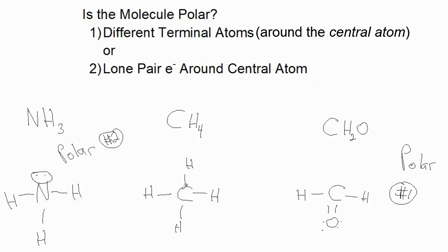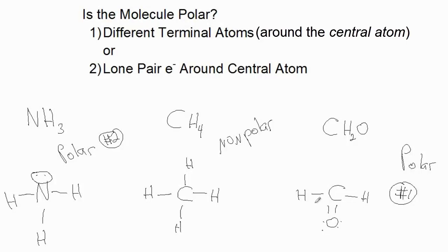CH4 has carbon in the center and four identical terminal atoms, so this is a nonpolar molecule. The last one, CH2O, has carbon double bonded to oxygen and two hydrogens singly bonded to the carbon. There are no lone pairs around the central atom, but there are different terminal atoms around the central atom, so criteria 1 is met and it is polar.